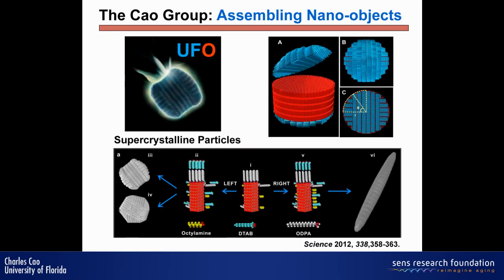In my group, we can also assemble things into more complex objects — for example, double-dome cylinders — with really long assemblies, each having unique properties. For instance, this structure is going to be a next-generation candidate for polarized light-emitting LEDs.